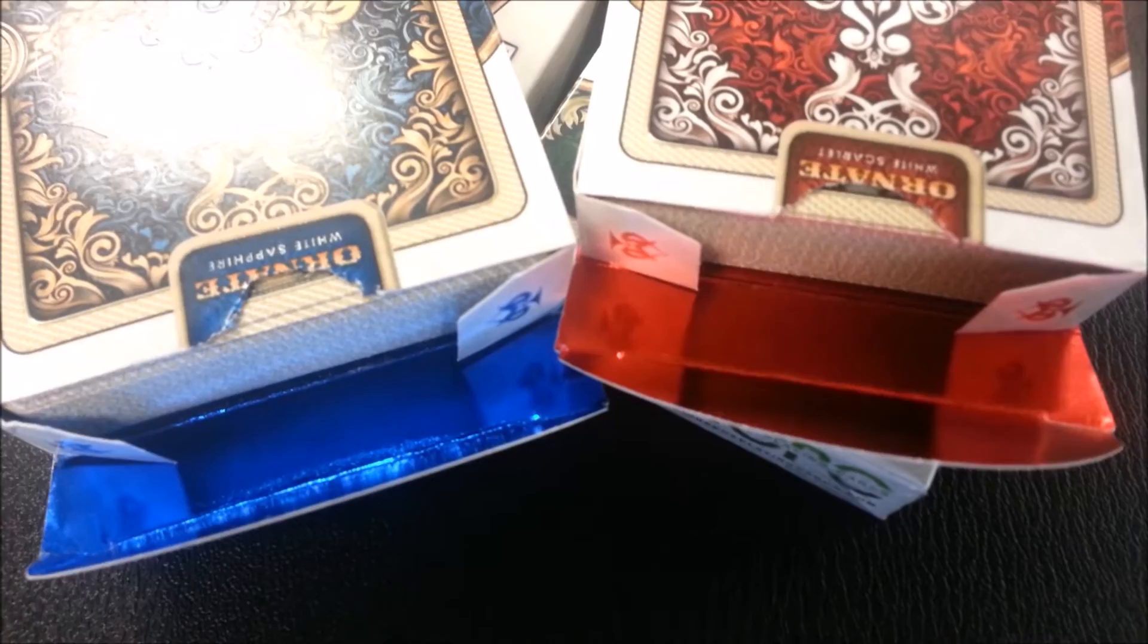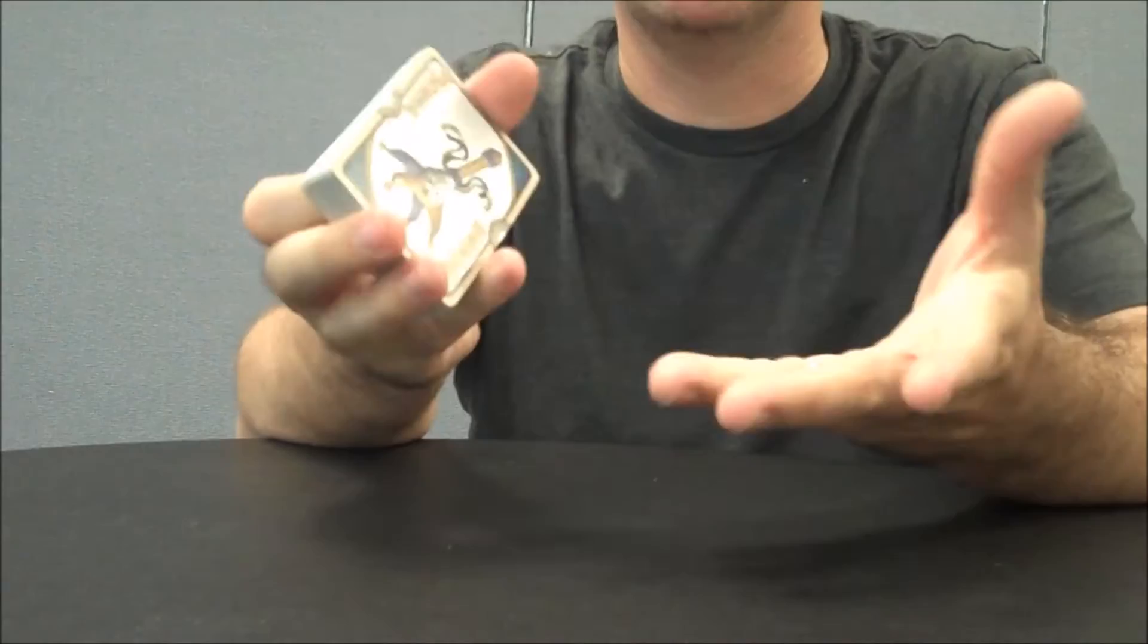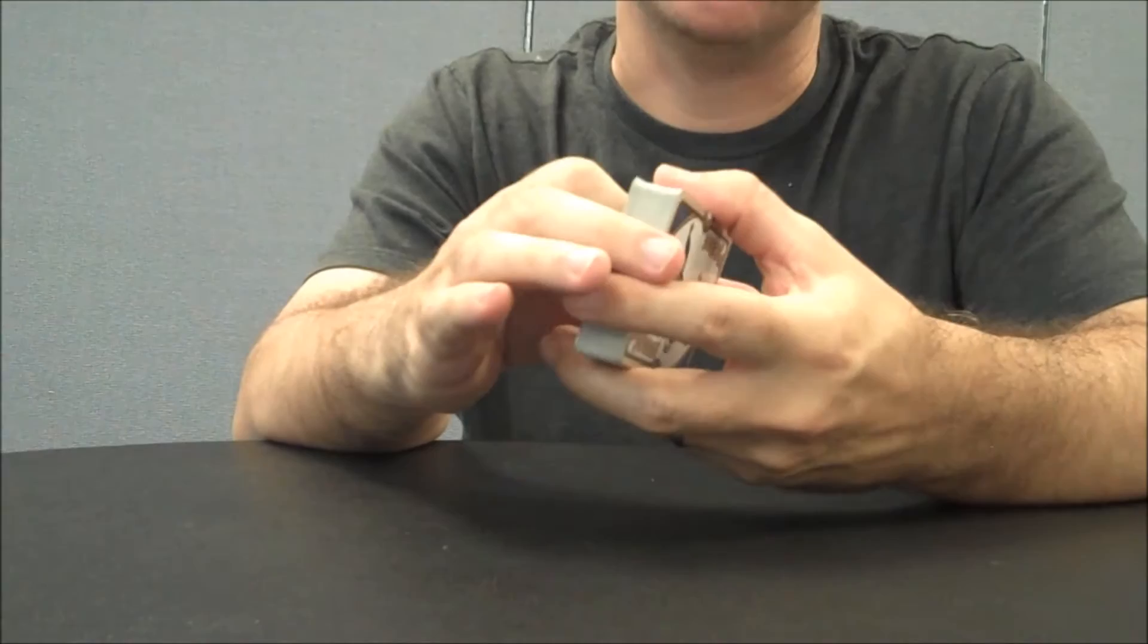Here's a close-up of the blue and red foil that's on the inside of their tuck cases. The stock of these cards is very similar to the previous Ornates. It is a retail stock with a modern cut. It has air cushion, linen embossing, and a magic finish. If you'd like to learn more about finish or embossing, you can click the link below in the description.